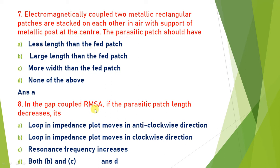In a gap coupled RMSA, if the parasitic patch length decreases, both the P and C loops in the impedance plot move in the clockwise direction and the resonance frequency increases. Both B and C are correct, so the answer is D.